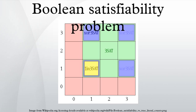SAT is trivial if the formulas are restricted to those in disjunctive normal form, that is, they are disjunctions of conjunctions of literals. Such a formula is satisfiable if and only if at least one of its conjunctions is satisfiable, and a conjunction is satisfiable if and only if it does not contain both x and NOT x for some variable x. This can be checked in linear time.